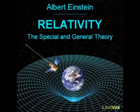An observer who is sitting eccentrically on the disk K' is sensible of a force which acts outward in a radial direction, and which would be interpreted as an effect of inertia, centrifugal force, by an observer who was at rest with respect to the original reference body K. But the observer on the disk may regard his disk as a reference body which is at rest. On the basis of the general principle of relativity, he is justified in doing this. The force acting on himself, and in fact on all other bodies which are at rest relative to the disk, he regards as the effect of a gravitational field. Nevertheless, the space distribution of this gravitational field is of a kind that would not be possible on Newton's theory of gravitation.